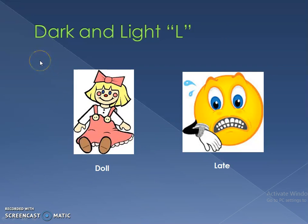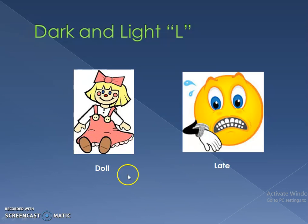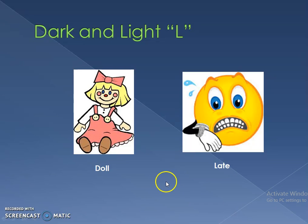Here are two other allophones: dark and light L. If you listen to the word 'dull', it's different than 'late'. In 'dull', the L is velarized — it's dark — while in 'late', the L is not velarized and is considered a light L. So the L here is an allophone, but it's not a different phoneme. It's still the same phoneme.